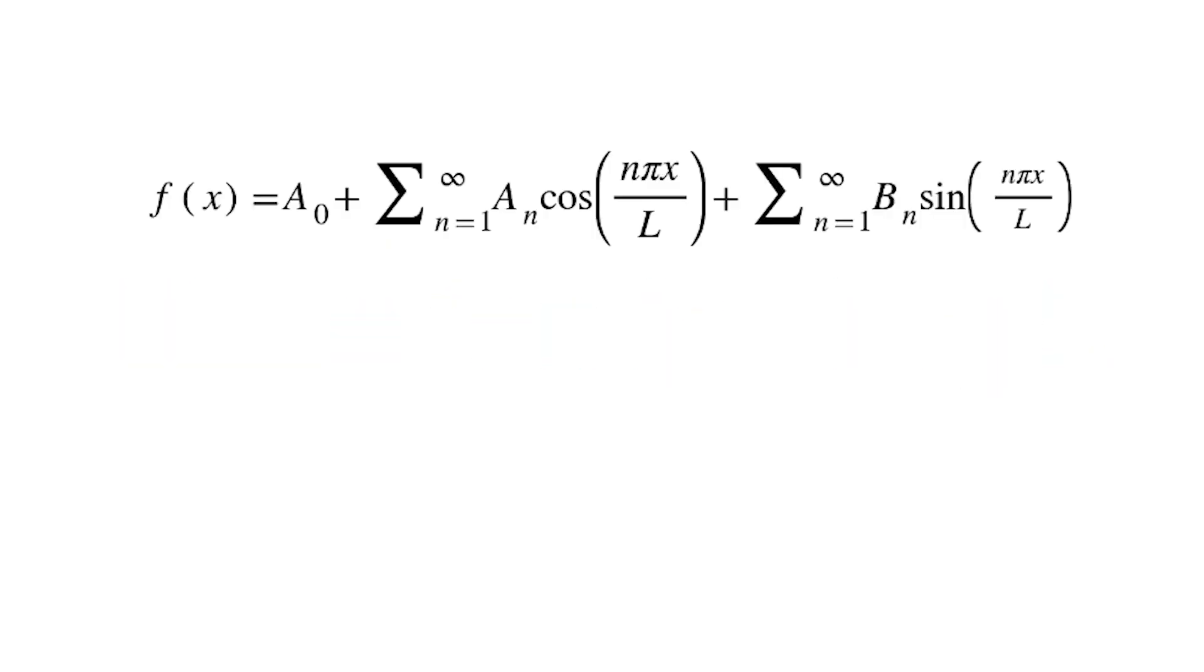So, how do we approach this? Well, it's essentially plug-in chug. We know that this up here is the original equation of f of x, and then, based on what we proved before, we can just plug in the coefficients with the equations. So, we know that a0 is equal to 1 over 2L times the integral of negative L to L of f of x dx, which, once you plug in f of x as L minus x, you just get L.